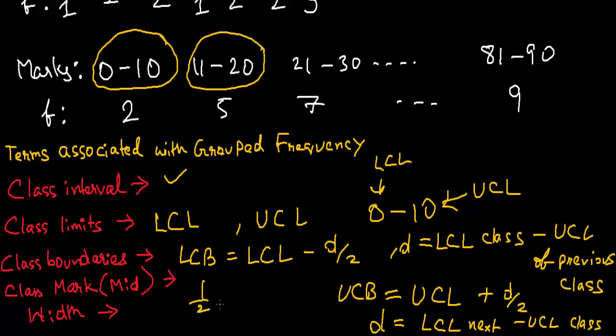Now we have the class mark or mid value that is simply (LCL plus UCL) by 2. And the last is the width of a class. This is UCB minus LCB, upper class boundary minus lower class boundary. So this will be all the introduction and the basic definitions.